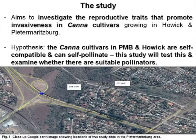The working hypothesis of this study is that the Canna cultivars I will be working with are self-compatible and can self-pollinate. This is basically what the study will test. It will also examine whether there are suitable pollinators in this new region of invasion.